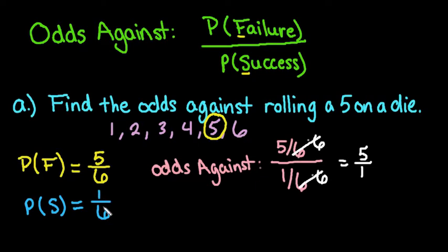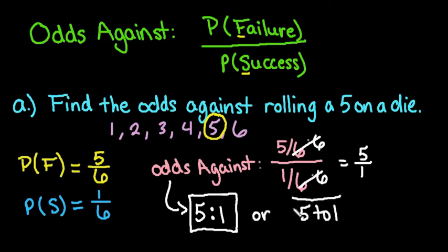You could write the answer in several ways. We could say the odds against is 5/1 as a fraction. The most common way is 5:1. Or we could write it as 5 to 1. So the odds against rolling a 5 is 5 to 1. Out of 6 times, you expect 5 failures and 1 success.